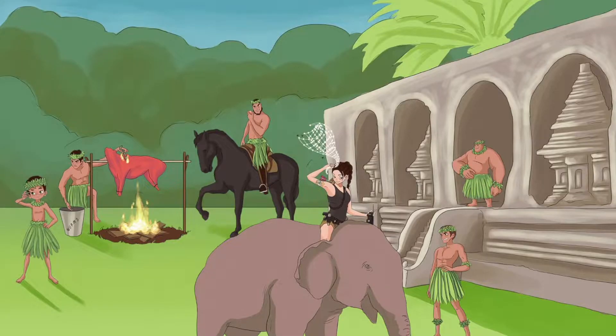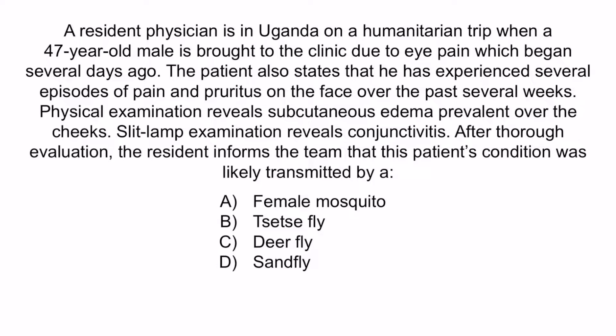Now let's review with a question. A resident physician in Uganda sees a 47-year-old male with eye pain that began several days ago. The patient also experienced episodes of pain and pruritus on the face over the past several weeks. Physical examination reveals subcutaneous edema over the cheeks, and slit lamp examination reveals conjunctivitis. The resident determines the condition was likely transmitted by: a) female mosquito, b) tsetse fly, c) deer fly, or d) sand fly. The findings of conjunctivitis and subcutaneous facial edema are highly suggestive of Loa Loa, which is transmitted by the deer fly. The correct answer is C.